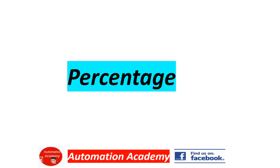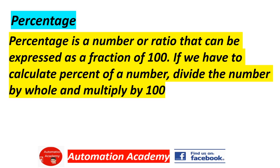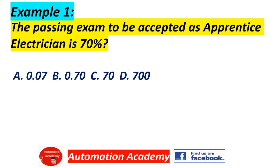Our next topic is Percentage. Percentage is a number or ratio that can be expressed as a fraction of 100. If we have to calculate the percent of a number, divide the number by the whole and multiply by 100. Example 1: the passing exam score to be accepted as an Apprentice Electrician is 70%. Answer: B, 2070.